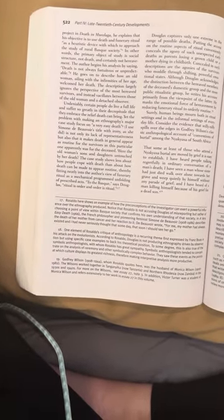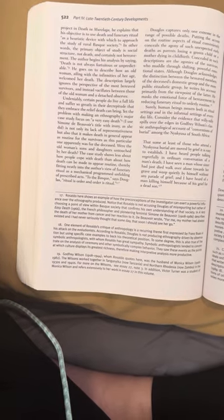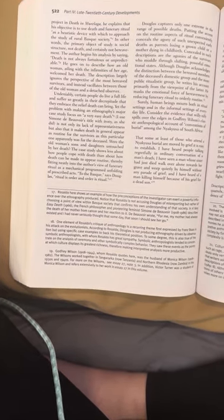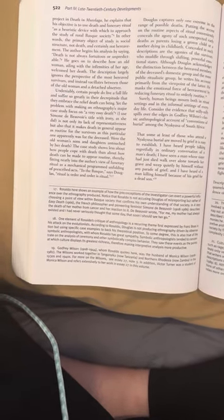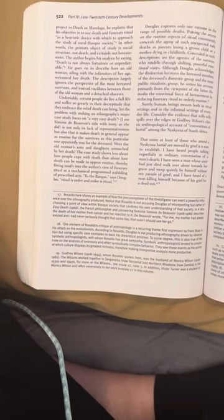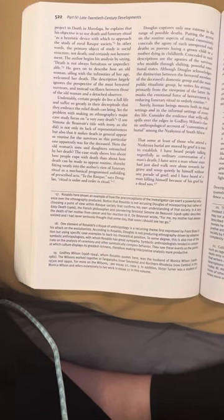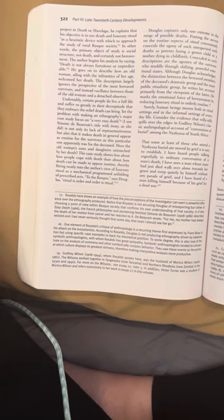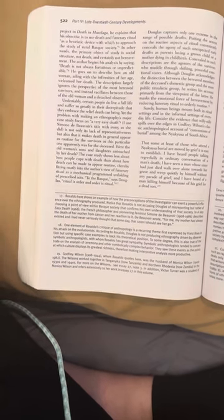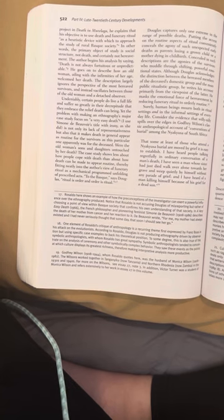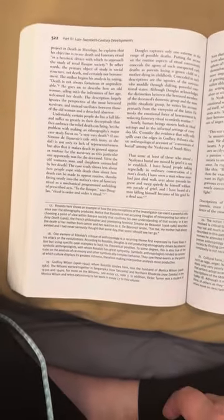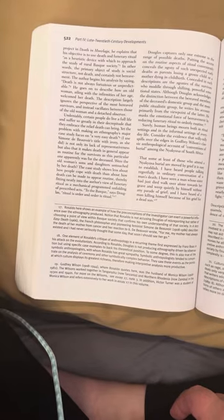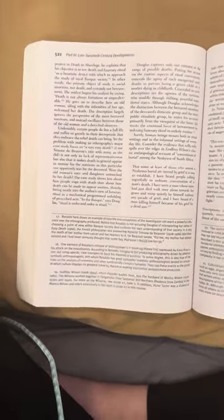When anthropologist William Douglas, for example, announces his project in Death in Murelaga, he explains that his objective is to use death and funerary ritual as a heuristic device with which to approach the study of rural Basque society. In other words, the primary object of study is social structure, not death and certainly not bereavement. The author begins his analysis by saying death is not always fortuitous or unpredictable. He goes on to describe how an old woman ailing with the infirmities of her age welcomed her death.